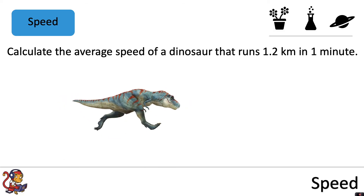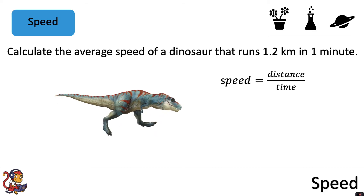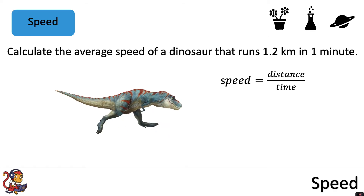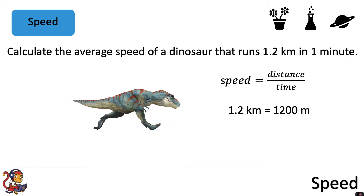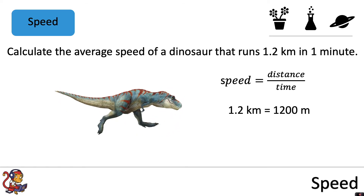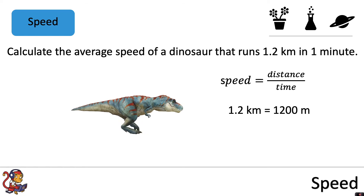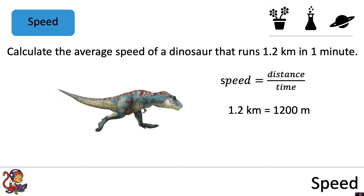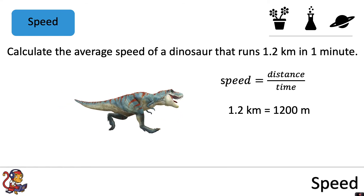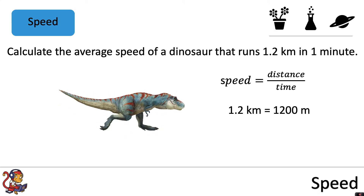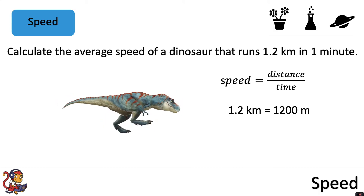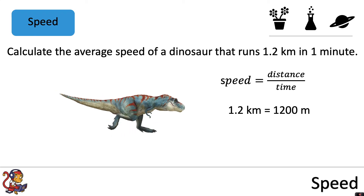This next question says: calculate the average speed of a dinosaur that runs 1.2 kilometers in one minute. We use the equation speed equals distance divided by time again, but first we have to convert kilometers into meters. There are a thousand meters in one kilometer, so 1.2 kilometers times a thousand gives us 1200 meters.